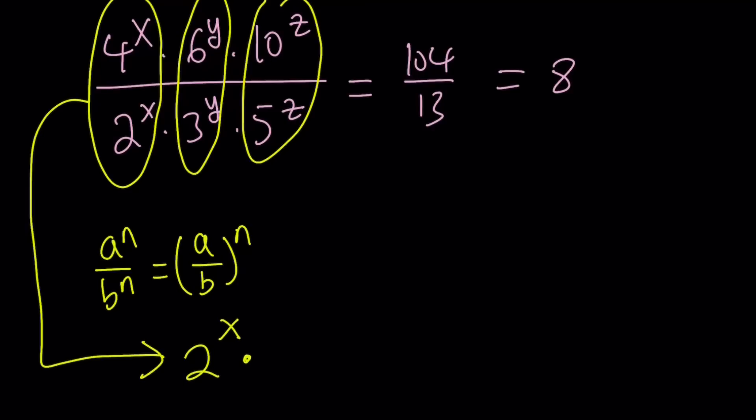What about 6 to the y divided by 3 to the y? That is going to be 2 to the y because 6 divided by 3 is 2, right? And then finally, 10 divided by 5 is 2, and that's going to be raised to the power z. Awesome. Simple enough, right? And this is equal to 8 from here. Great. Now, we have a nice equation.